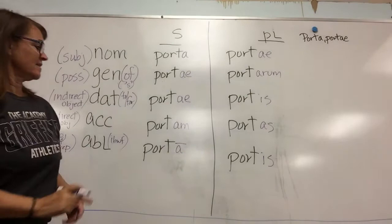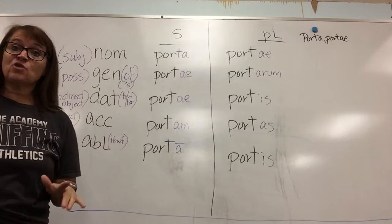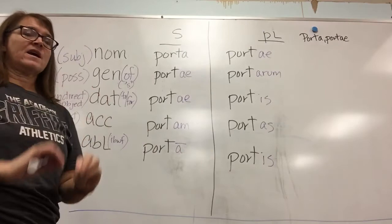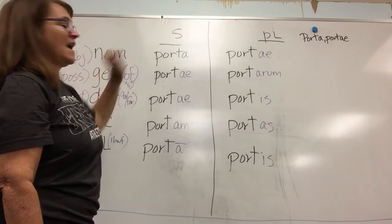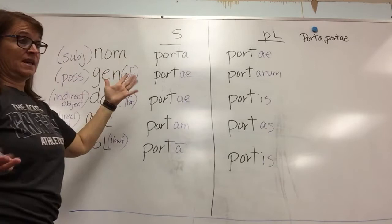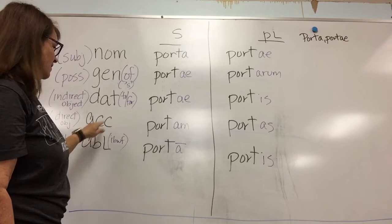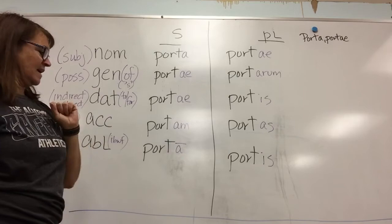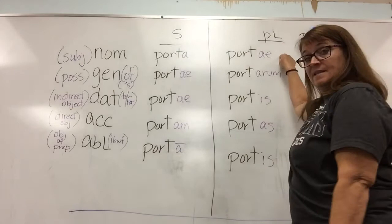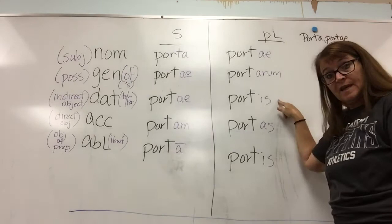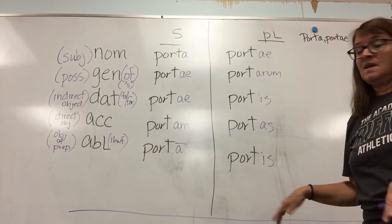Hopefully you declined all the words in the vocab just like that. So now let's use our special words and translate these. Remember Latin has no words for 'a' or 'the,' but we can add that. So I could say 'a gate' or 'the gate' for the nominative, or just 'gate.' For genitive, 'of the gate.' Dative: 'to' or 'for the gate.' The accusative case: 'the gate.' And for the ablative: 'in, by, with, from the gate.' We can do the same thing with the plural — just add an S: 'the gates,' 'of the gates,' 'to/for the gates,' 'the gates,' and 'in, by, with, from the gates.'